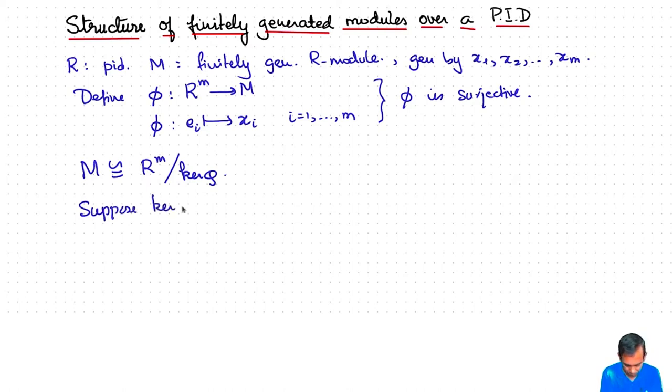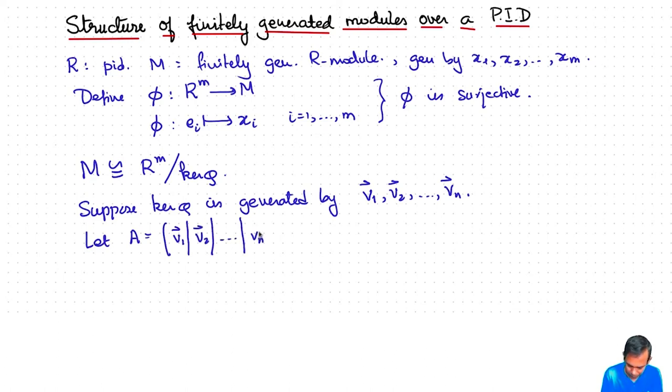Let's say kernel T is generated by vectors, let's call them d₁, d₂, ..., dₙ. These are vectors in R to the m, I'm going to think of them as columns. So then you form the matrix. So columns are these vectors d₁, d₂, ..., dₙ. And so this matrix has m rows and n columns. And what we are saying is that kernel T is the column space.